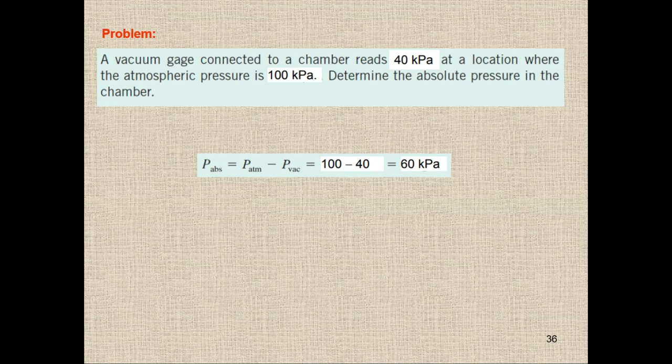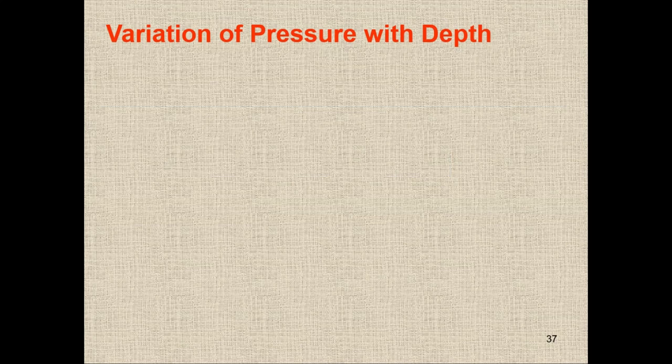So we have four types of pressure: atmospheric pressure, gauge pressure, vacuum pressure, and absolute pressure — which is the actual pressure at a given position.